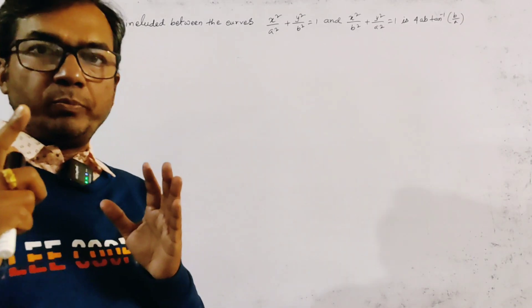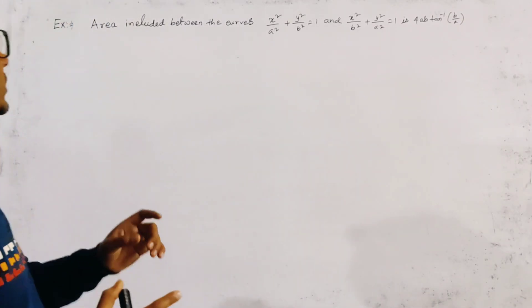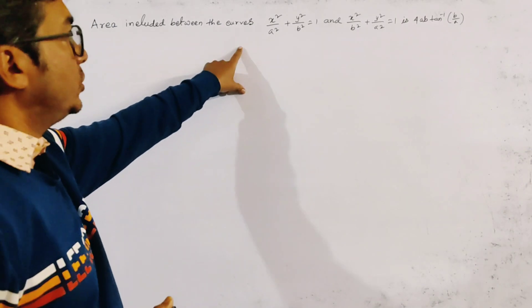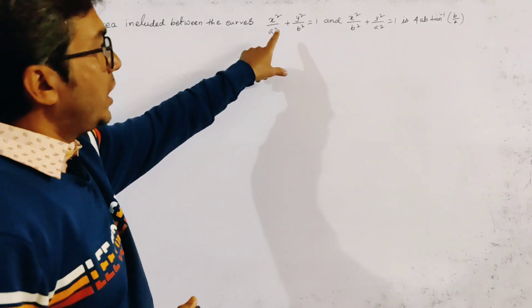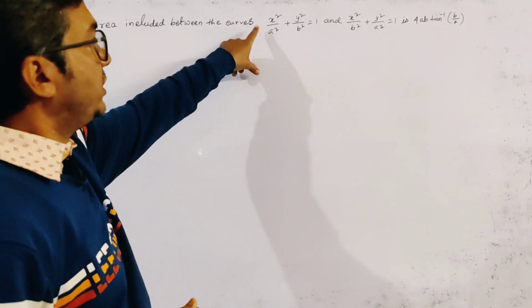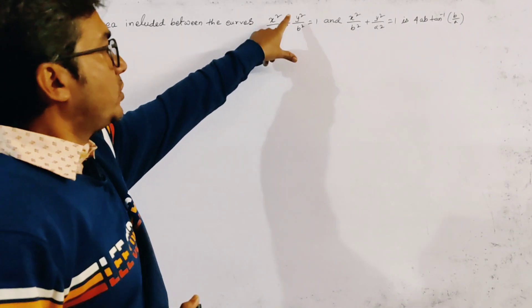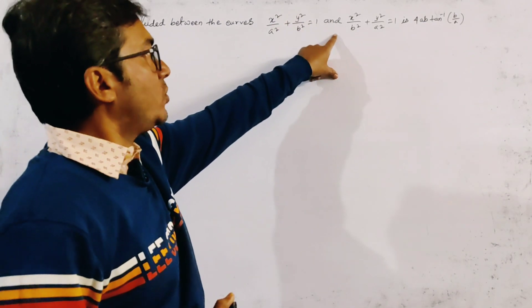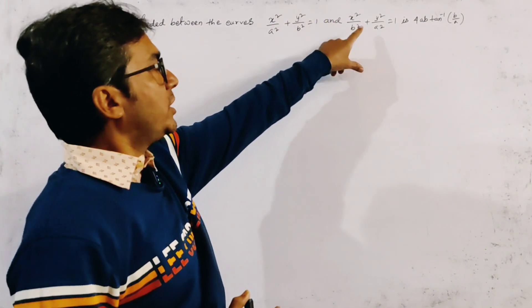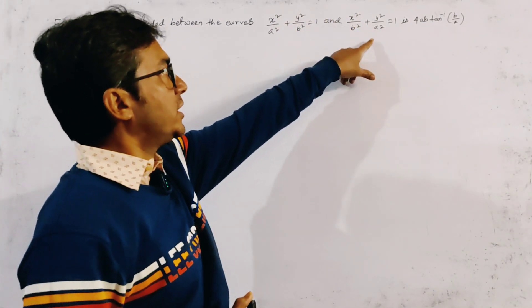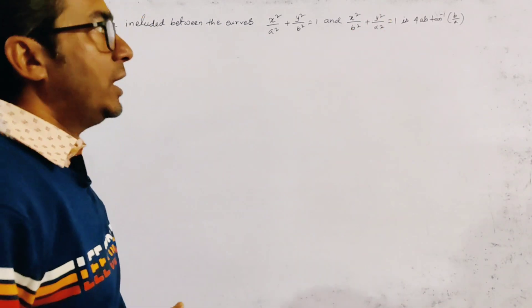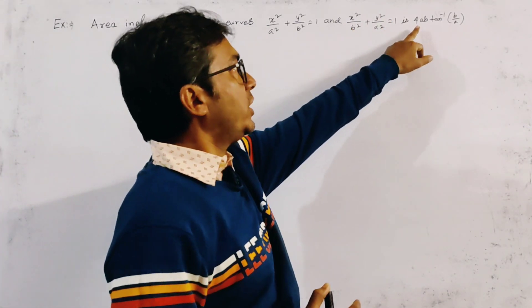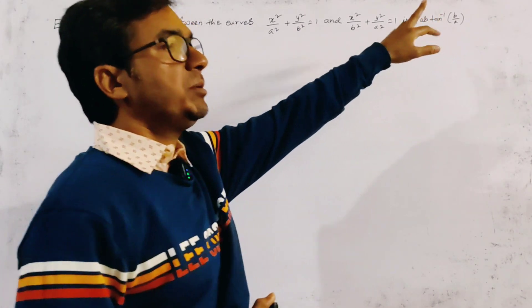Here we have to find out the area included between two curves — two ellipses. One of them is x²/a² + y²/b² = 1, and another one is x²/b² + y²/a² = 1. We have to prove that the included area is 4ab·tan⁻¹(b/a).